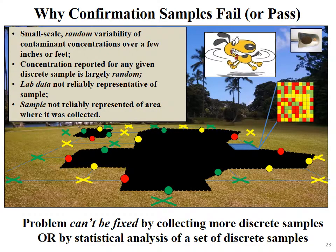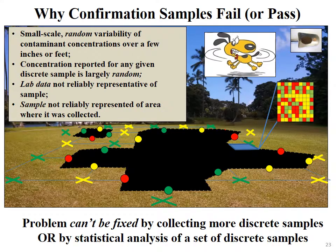This is why confirmation samples pass or fail — it's all due to small-scale random variability of contaminant concentrations over a few inches or feet. A useful analogy: it's like a person on an elephant's back with a microscope trying to guess what the elephant is. That's the problem with discrete soil samples — you're testing too small a mass or volume of soil to make sense of it. You're lost in heterogeneity. You'll get a number, but it's not reliable, not really meaningful, and will be largely random within some unknown range.